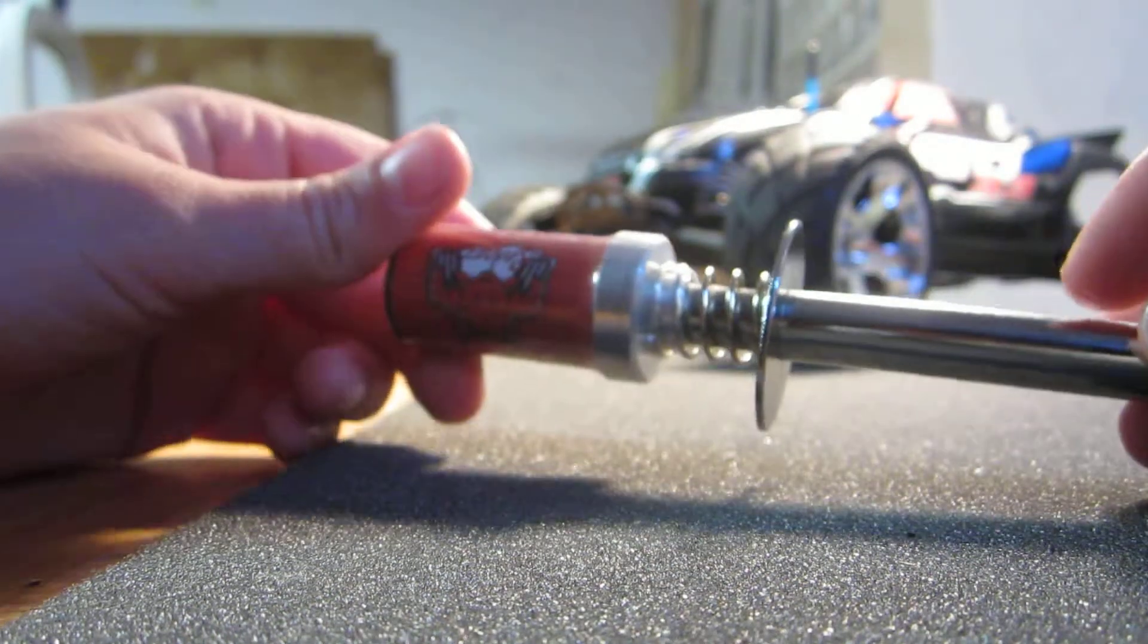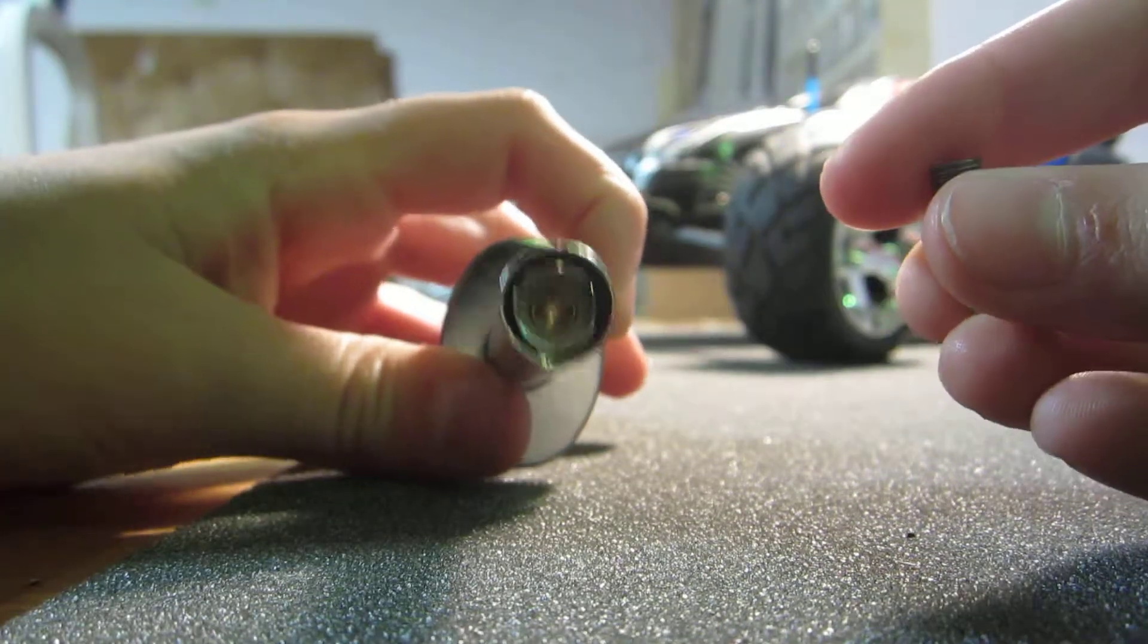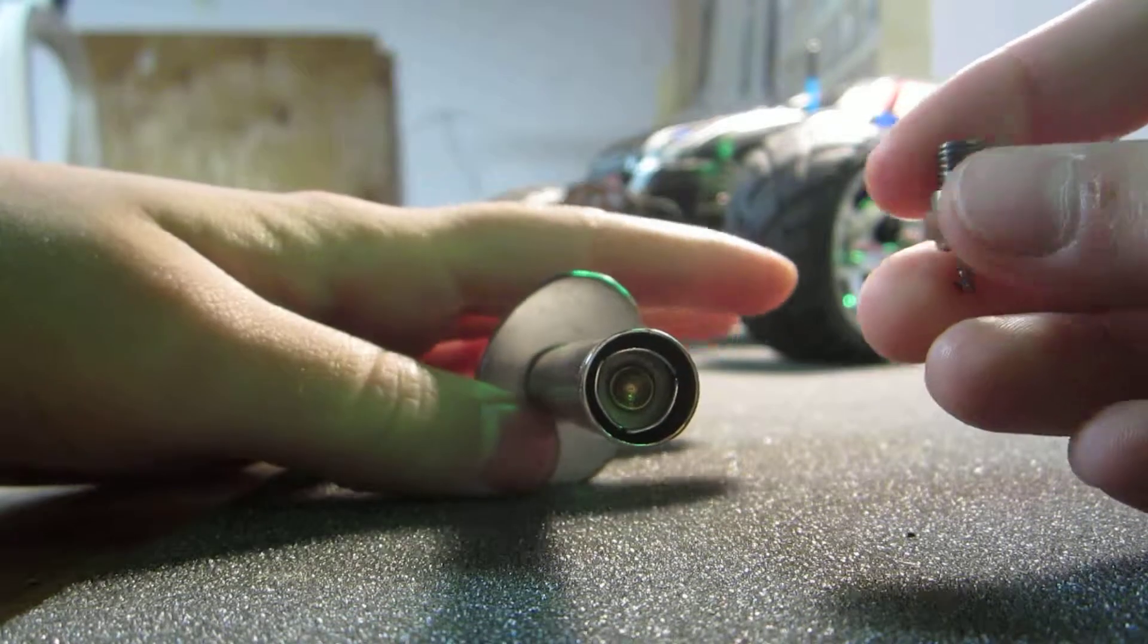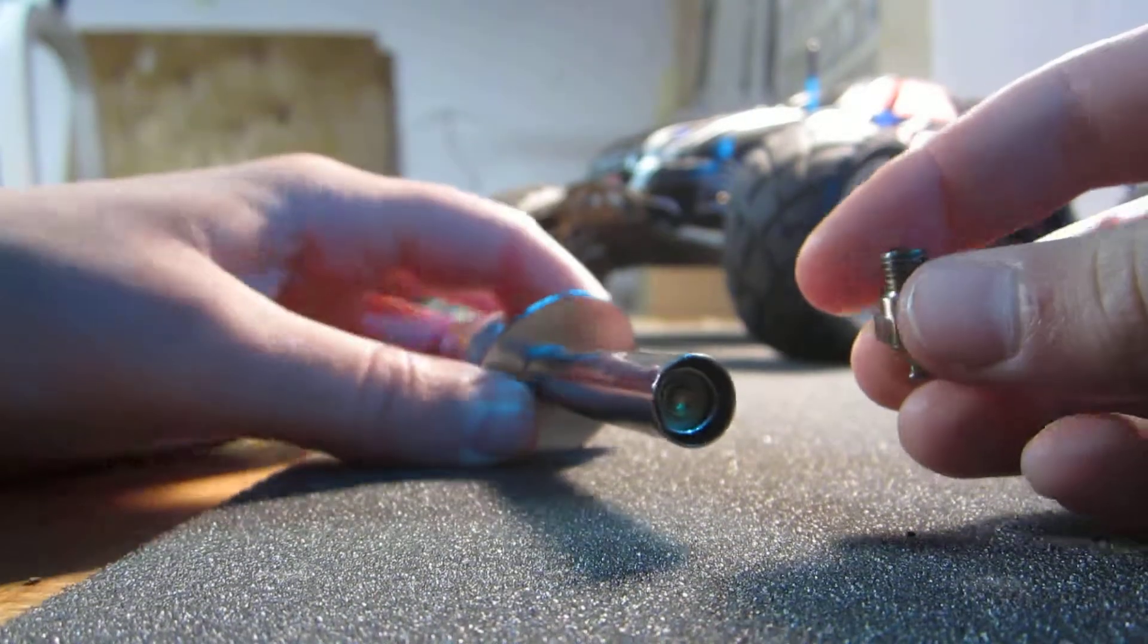This is a Red Cat Racing glow plug igniter. It was like $20 for a kit I got with a 4A wrench, a smaller little 4A wrench, this glow plug igniter, a fuel bottle, and some tuning screws.